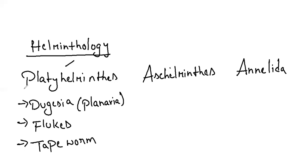Coming to platyhelminthes, here the entire body is dorsoventrally flattened, which will be leaf-like. That's why the name platy, which means flat, and helminthes means worms. Planaria will be free-living and non-parasitic. In platyhelminthes we have three classes: Turbellaria, Trematoda, and Cestoda.